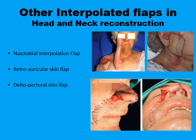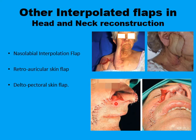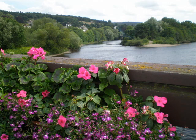Other examples of interpolated flaps in head and neck reconstruction include the deltopectoral skin flap for skin defects in the neck or face below the level of the zygoma, the retroauricular skin flap used as a random interpolated flap for reconstruction of defects in the auricle, and nasolabial interpolated flaps used in reconstruction of nasal defects. With this, we come to the end of this presentation on interpolated flaps and the paramedian forehead flap. Assalamu alaikum.